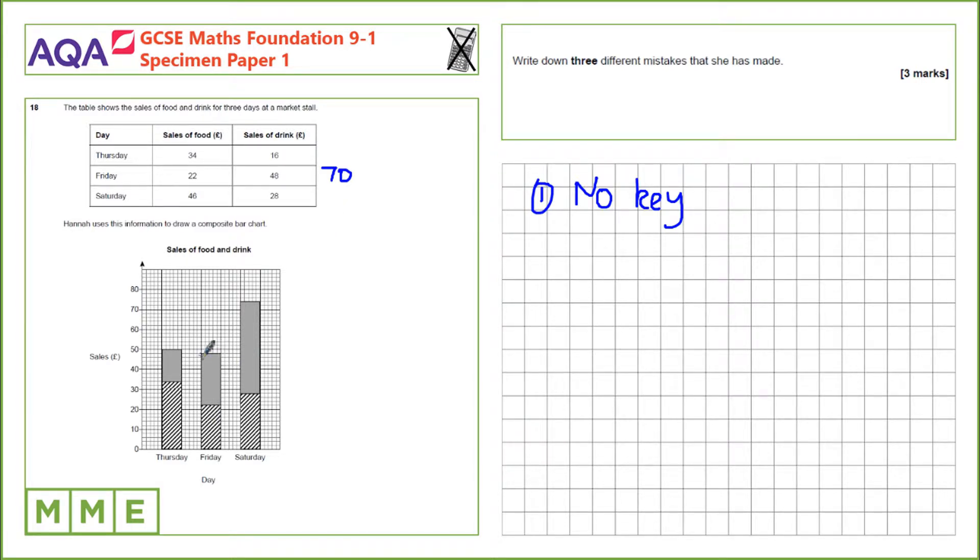However, the top bar here only goes up to what looks like 48. So this should be all the way up here. So Friday is plotted incorrectly.